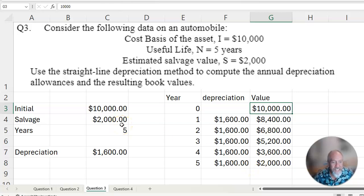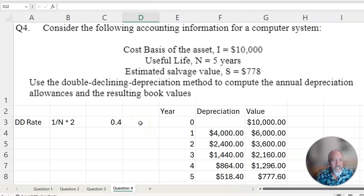You just subtract $1,600 off of it every year, and in year 5 you should be at the $2,000 mark. It actually is that easy. With straight-line depreciation, the initial minus the salvage divided by the number of years gives you your depreciation. If you subtract it, you should end up at the salvage cost.